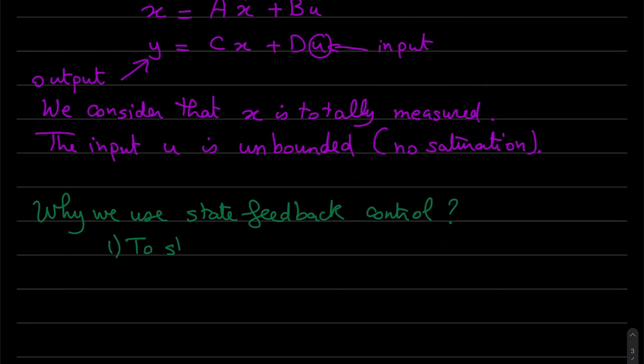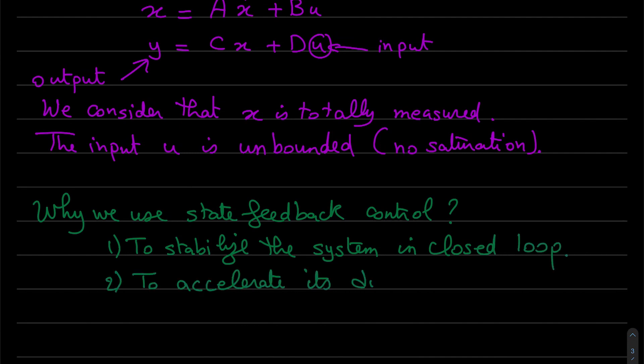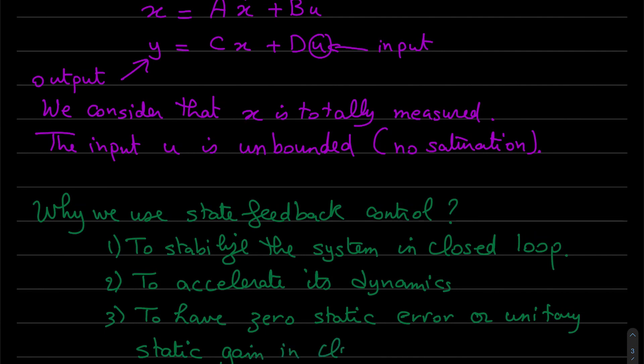Why we use state feedback? To stabilize the system in closed loop if it is unstable in open loop, to accelerate its dynamics if it is slow, and to have a zero static error or unitary static gain in closed loop.